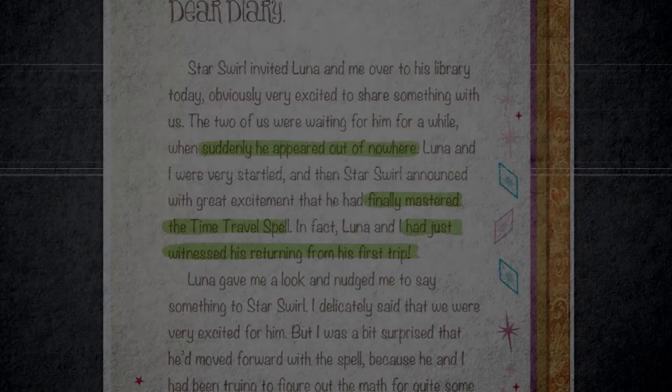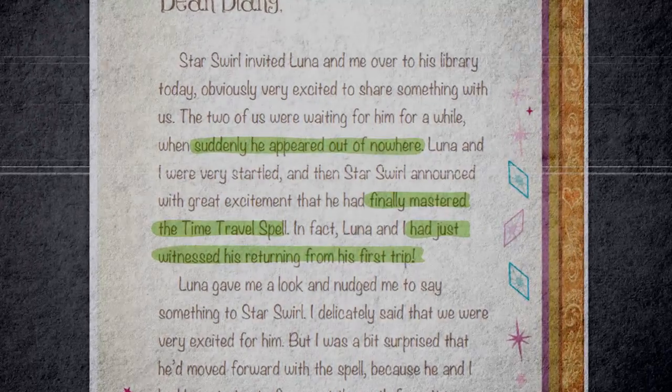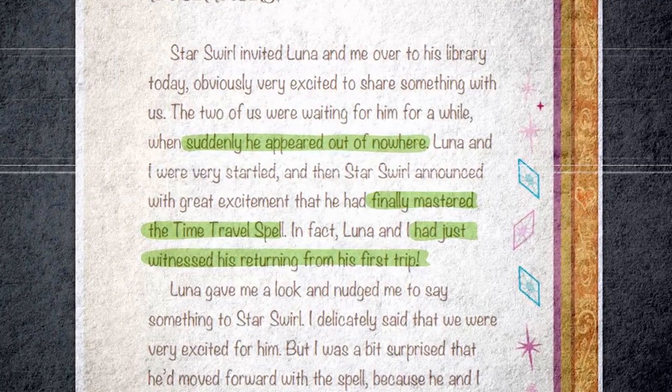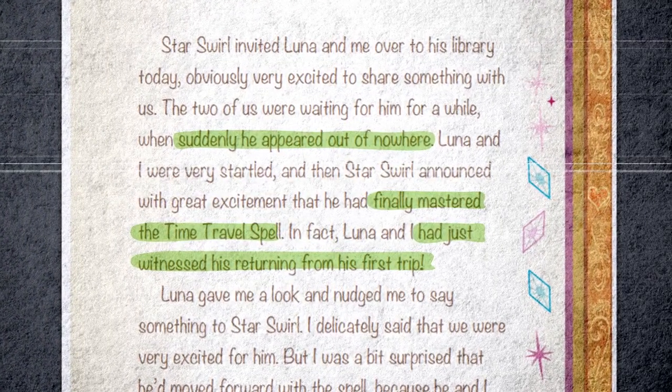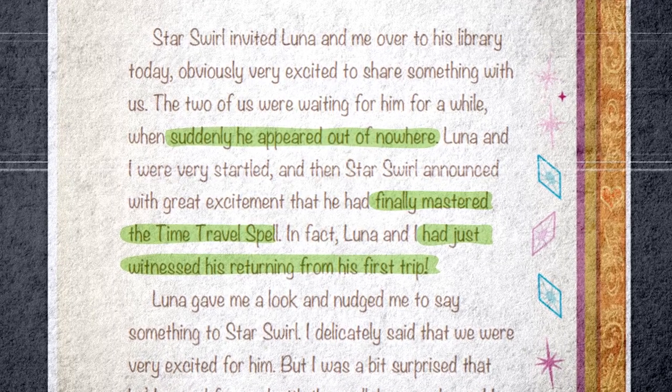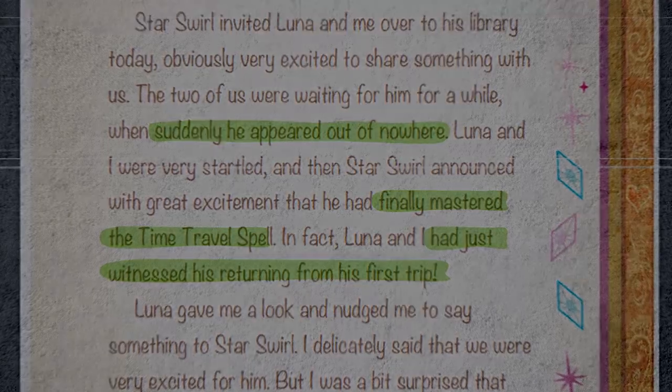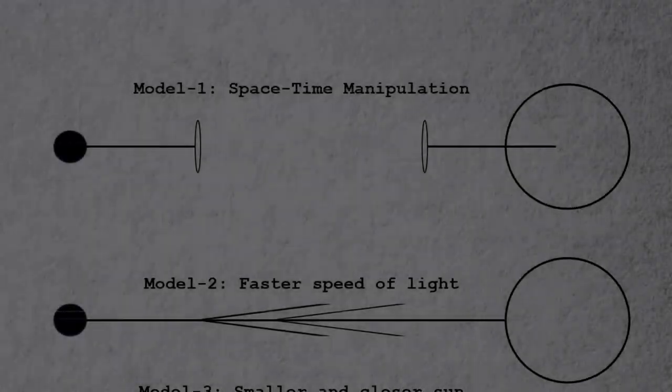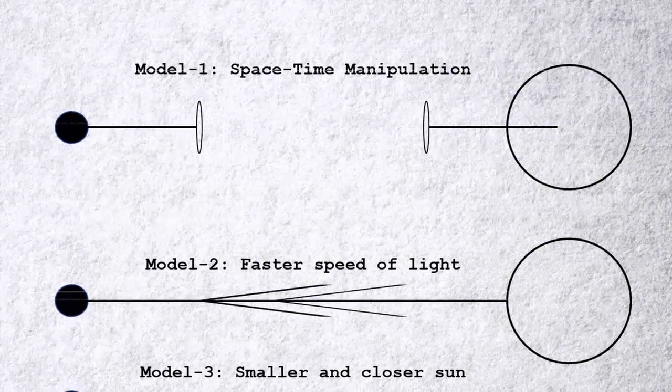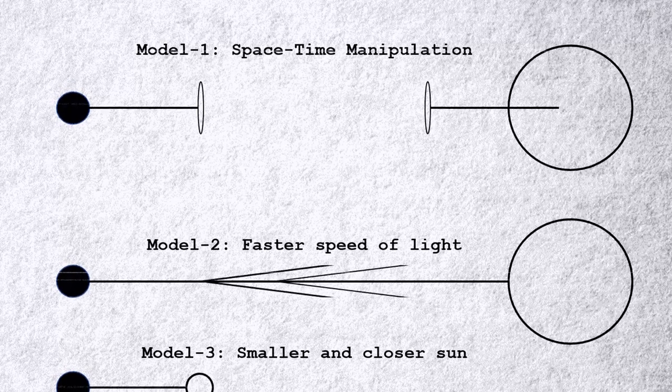The problem I have is that not only has the ability for magic to affect the past been very limited, but we know from the aforementioned chapter book that Starswirl was moving the Sun long before he created the time travel spell, so I don't know about that. Besides that, in order for the Sun to be moved the way it is, we have two remaining explanations.